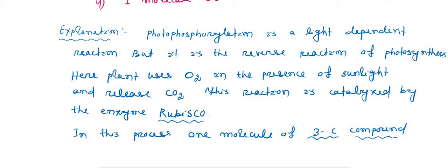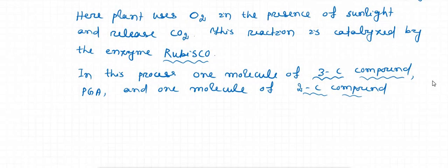In this process, one molecule of 3-carbon compound PGA and one molecule of 2-carbon compound phosphoglycerate are produced.